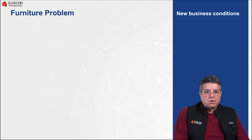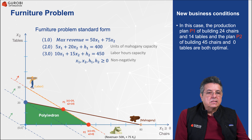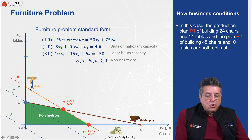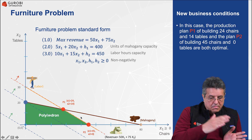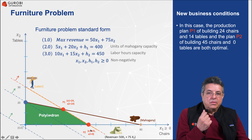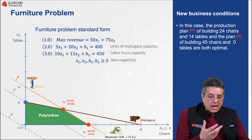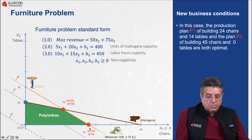Geometrically, the key observation is that the revenue equation is parallel to the labor equation. As we increase revenue, we reach the labor constraint as the maximum. In this case we find two optimal basic solutions that maximize total revenue: P1, where the production plan is to build 24 chairs and 14 tables, and P2, which is to build 45 chairs and no tables.